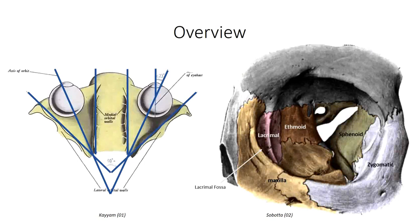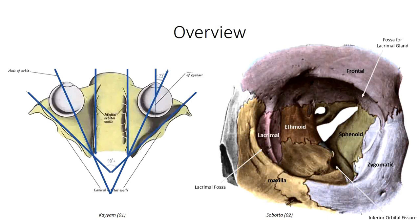The lateral wall is made up of the zygomatic bone anteriorly and sphenoid bone posteriorly. This is the strongest portion of the orbit, as it needs to resist mechanical trauma to the side of the face. The orbital floor separates the orbit from the maxillary sinus and is formed by the maxilla, zygomatic, and palatine bones. The floor is separated from the lateral wall by the inferior orbital fissure. The roof of the orbit lies mostly in the horizontal plane and is formed by the frontal bone anteriorly, along with the lesser wing of the sphenoid bone posteriorly. On the lateral surface of the roof is the fossa that houses the lacrimal gland for tear production. The apex is found posteriorly within the orbit and is composed primarily of the sphenoid bone, along with the palatine bone.